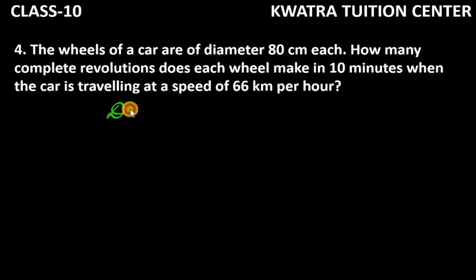First of all, we have written information and what we have given. We have given the diameter and we have said the wheel is 80 cm. Now, it says how many complete revolutions does each wheel make in 10 minutes when the car is traveling at a speed of 66 km per hour.